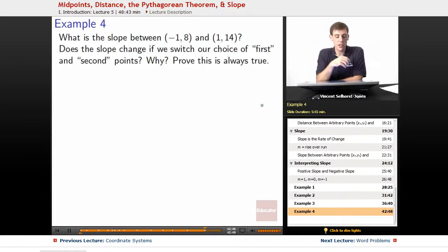Alright, example four. What's the slope between negative 1 comma 8 and 1 comma 14? Remember, we figured out slope is rise over run.